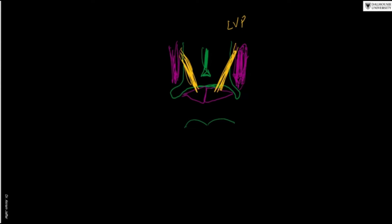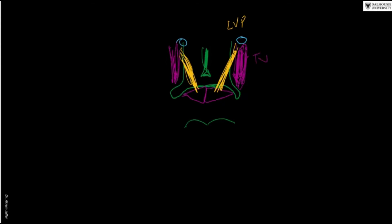Usually the levator and tensor veli palatini act together. At the base of the skull at this location is the opening of the auditory tube. Behind the nose is the nasopharynx where the auditory tube opens. So here we have both the levator veli palatini and the tensor veli palatini muscles.